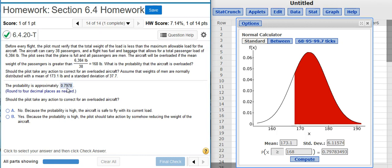I mean, there's more than 50% chance that you're going to be overloaded. So, I'd say the probability is pretty high, and that means you need to be taking some corrective action. So, we're going to mark yes here.